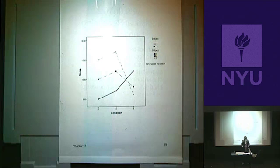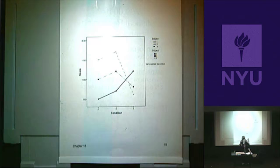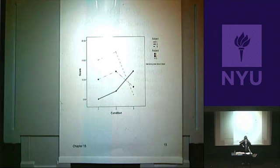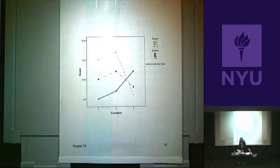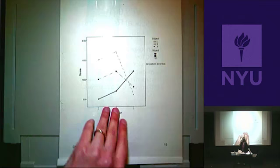An important point for future research: a repeated measures design measured over time very often doesn't have sphericity. If you measure someone now and then again in six months, the relationship between now and next week is very likely not the same as between now and six months from now. Any time you're doing a study with measurements over a serious amount of time, you have to be very careful because you often don't have sphericity. If anybody has questions on two-way ANOVA or material for your exam this week, you can ask them.